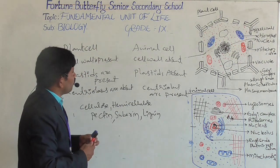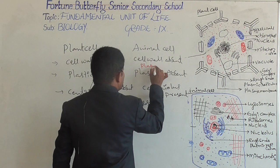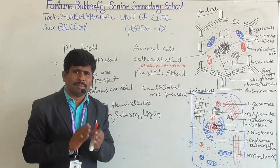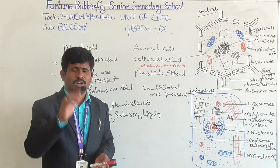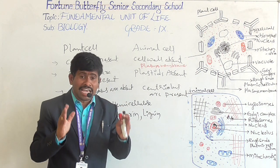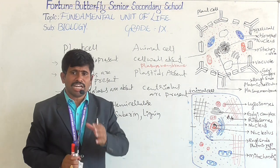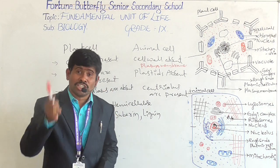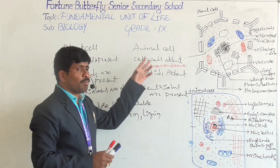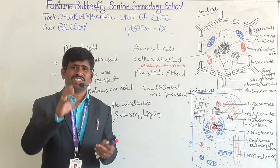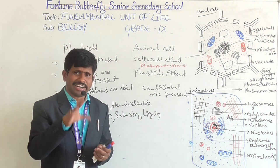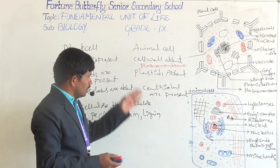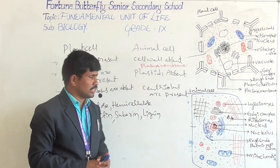In the animal cell, the cell wall is absent, but the plasma membrane or cell membrane is present. The plasma membrane is a semi-permeable membrane — it allows only some substances through. Through the plasma membrane, oxygen and CO2 are exchanged in the process of diffusion. Diffusion is the movement of molecules from higher concentration to lower concentration until both concentrations are equal.